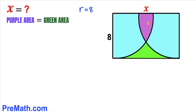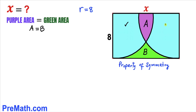Let's focus on this purple shaded area. I'll represent this area as uppercase A and the green shaded area as uppercase B. We know that the purple area is equal to the green area, so therefore A equals B. Now let's focus on the blue shaded region — both blue regions are identical by symmetry. So if the area of one blue region is C, the other is also C.